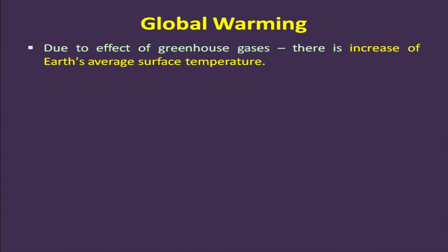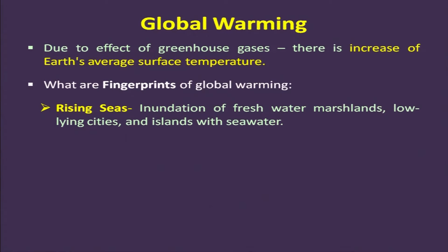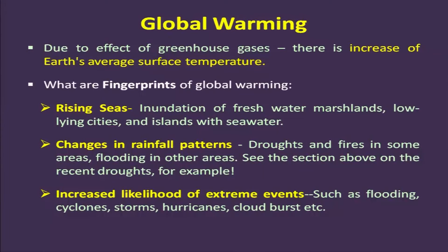Due to the effect of greenhouse gases, there is an increase in the earth's average surface temperature — this is global warming. The fingerprints, or indications, of global warming include rising sea levels, which will result in the inundation of many areas close to coastal regions — including freshwater marshland, low-lying cities, and islands. Global warming has also caused changes in rainfall patterns, droughts, and fires — a current example being the Amazon fire in Brazil.